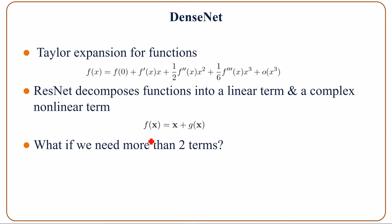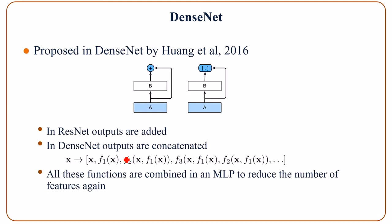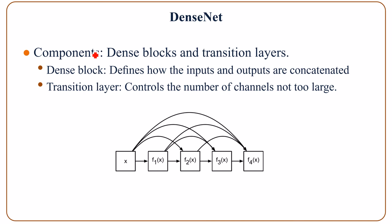Now we talked about DenseNet. ResNet decomposes functions into a linear term and a complex nonlinear term, but what if we need more than two terms? This is offered by Huang in 2016. In ResNet, outputs are added, but in DenseNet, outputs are concatenated. In the end, all the functions are combined in an MLP to reduce the number of features. There are two main components in DenseNet, including dense blocks and transition layers. A dense block defines how the inputs and outputs are concatenated, and the transition layer controls the number of channels so that it is not too large.